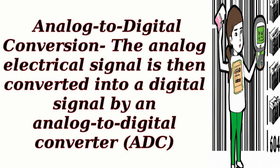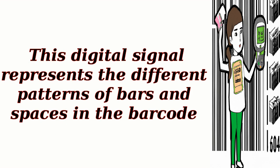Analog to digital conversion: the analog electrical signal is then converted into a digital signal by an analog-to-digital converter (ADC). This digital signal represents the different patterns of bars and spaces in the barcode.